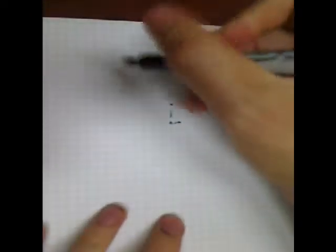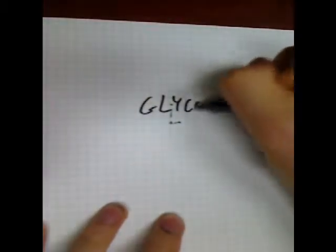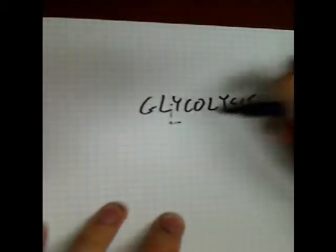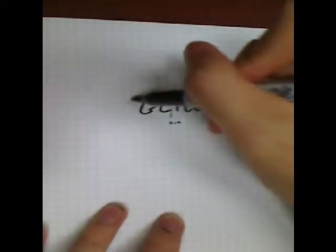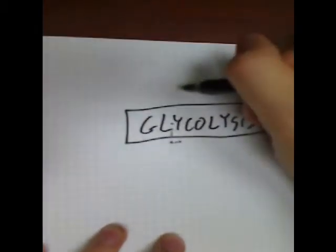This medium-sized picture is going to break aerobic respiration down into three sets of reactions. The first one is glycolysis — 'lysis' meaning splitting, 'glyco' meaning glucose. So that's what's going to happen.